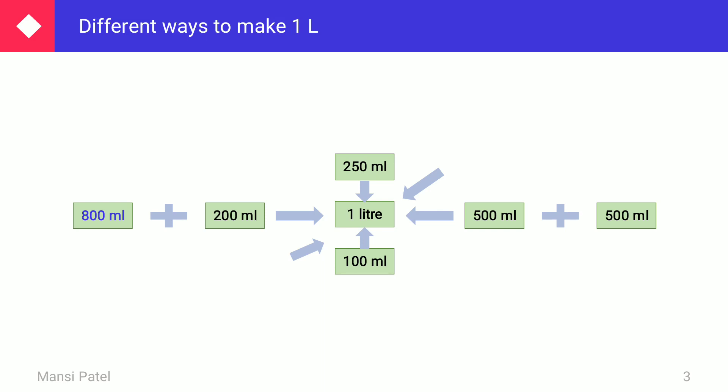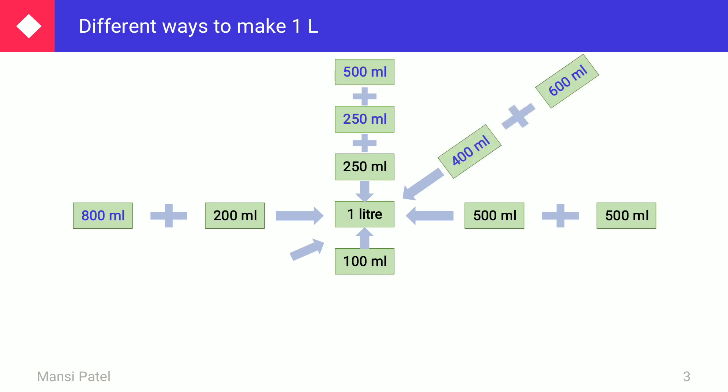Another way to make 1 liter: 1 liter equals 1000 ml. If 250 ml is given, what is remaining? 1000 minus 250 is 750 ml. We can make 750 ml as 500 ml plus 250 ml, so 500 ml plus 250 ml plus 250 ml completes 1000 ml. Also, 400 ml plus 600 ml equals 1000 ml.